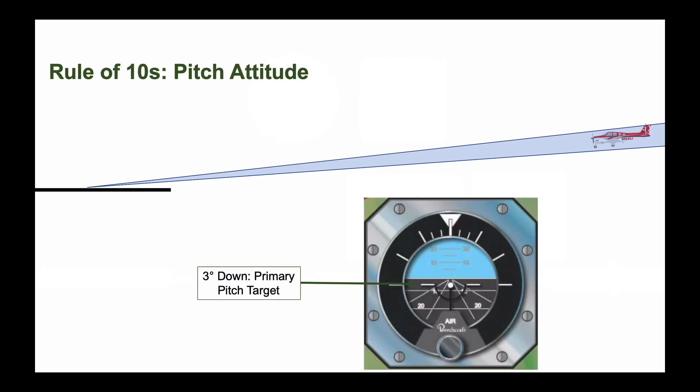First, aircraft pitch. In an approach with vertical guidance, for example, an ILS or a GPS with an electronic glide path, in most cases the airplane will need to fly a roughly 3-degree nose-down pitch to maintain the descent path. The precise attitude will vary slightly for individual aircraft and even by how you set or perceive the attitude indicator. But the nose will be slightly down and stable as you continue the approach.